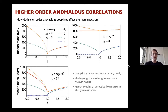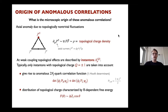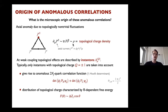To look at this at a more fundamental level, we ask about the microscopic origin of these anomalous correlations. The axial anomaly arises from topologically non-trivial fluctuations. The divergence of the axial current is proportional to the topological charge density. At weak coupling — for instance at large temperatures — these effects are described by instantons, where the superscript q denotes the topological charge.